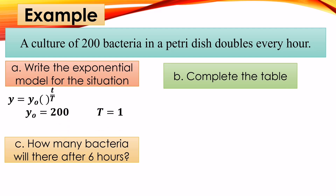The initial amount is 200 because the culture starts with 200 bacteria. The unit of time T is 1 because the bacteria double every hour. Therefore, the exponential model is y = 200 · 2^(t/1). The base 2 comes from the word 'doubles,' and t/1 is our time over the unit of time.